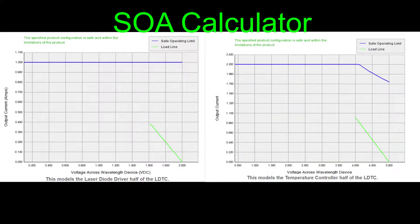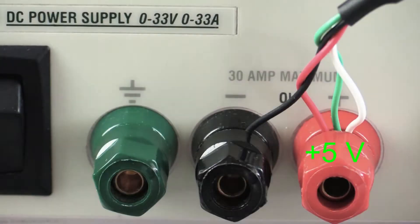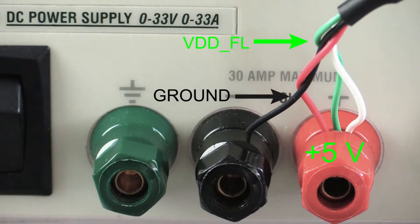Before wiring, ensure the unit will be in the safe operating area. The laser diode driver half cannot dissipate more than 2 watts, and the temperature controller half cannot dissipate more than 9 watts. In this example, we will use single supply operation.